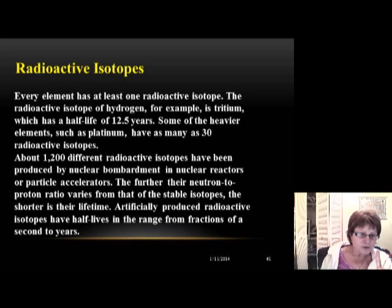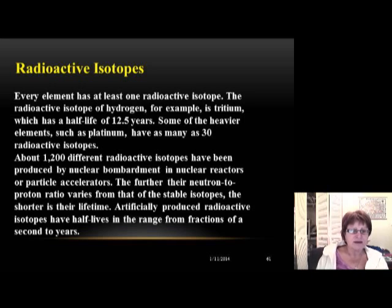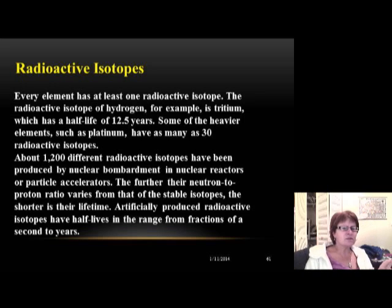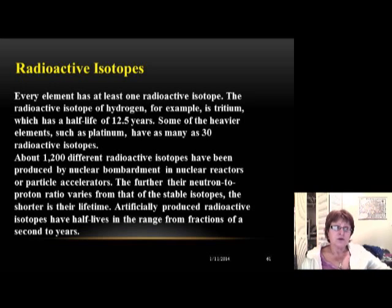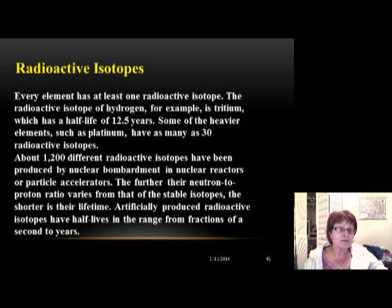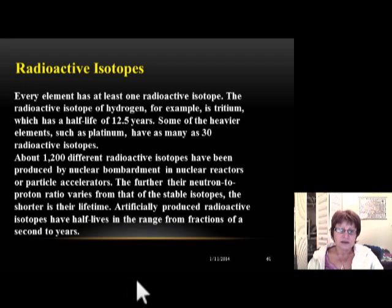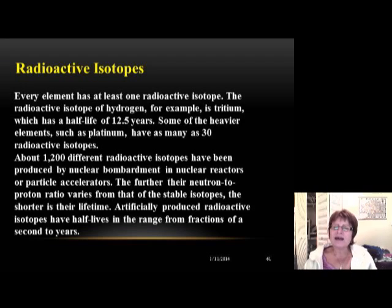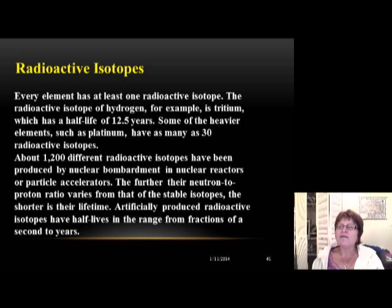When hydrogen has two neutrons and one proton, that's tritium — mass number 3. Tritium is radioactive with a half-life of about 15 years, and it's used to measure the age of groundwater, telling us when water entered underground and how long it stayed before reaching the surface. Heavier elements can have even more radioactive isotopes — platinum has as many as 30.